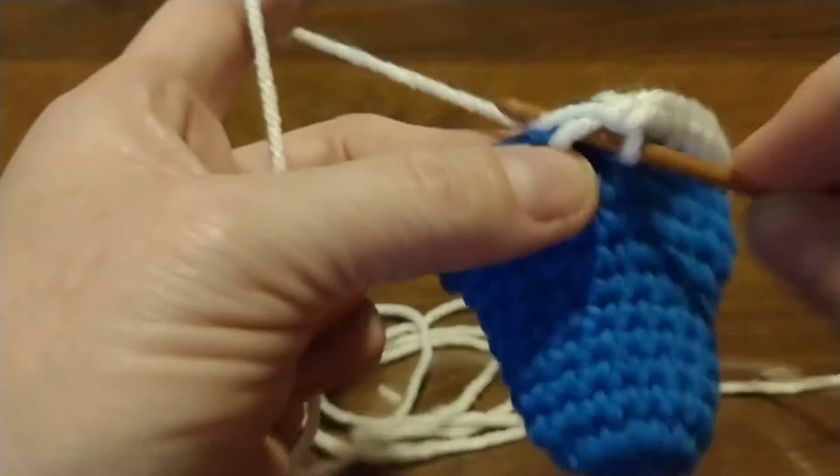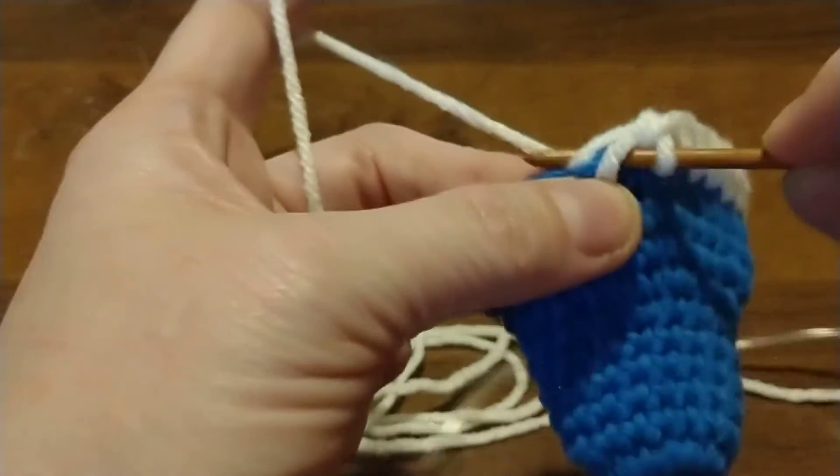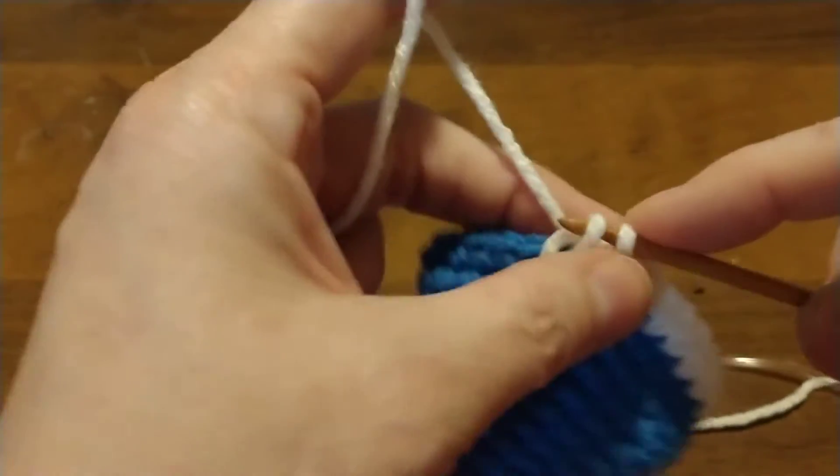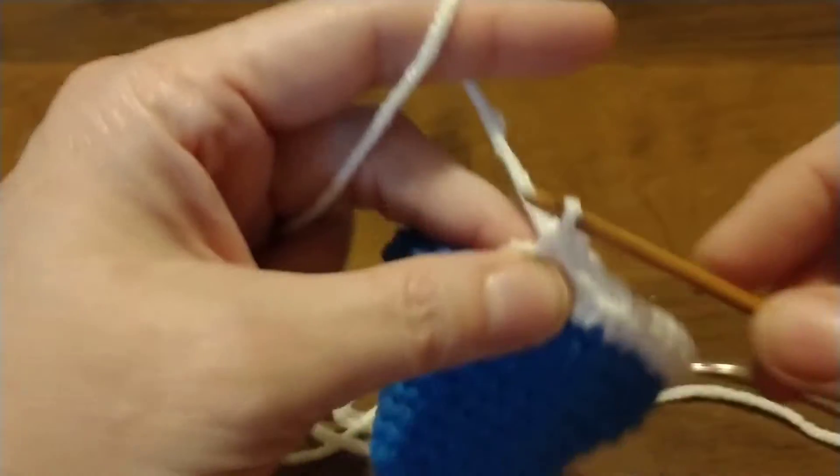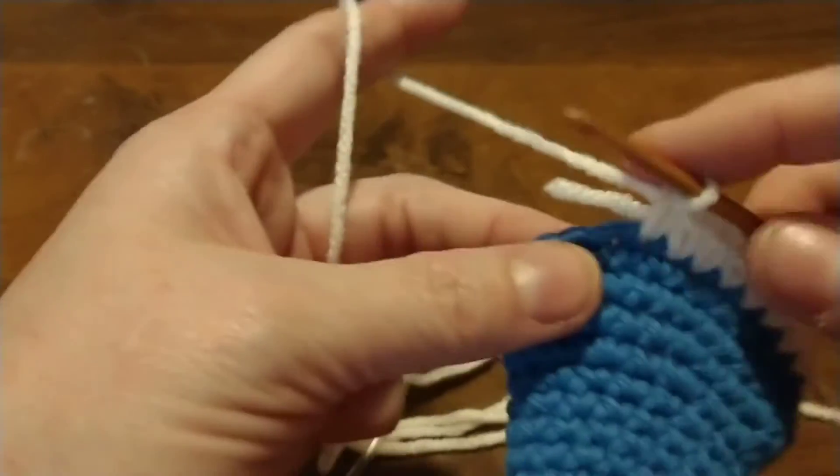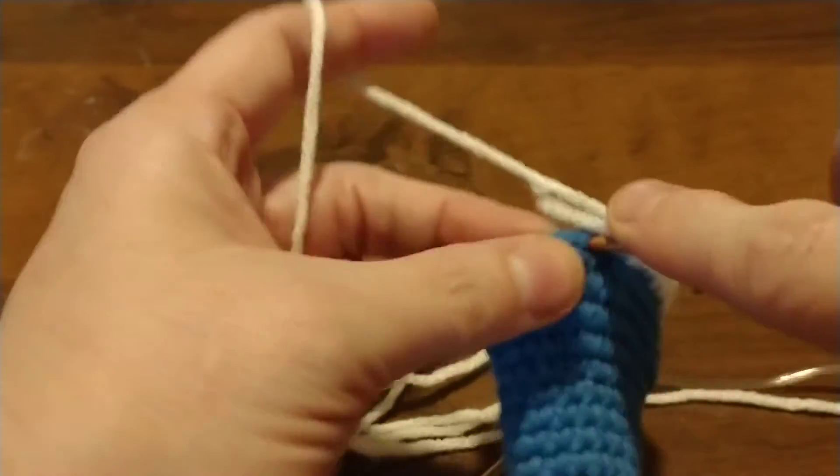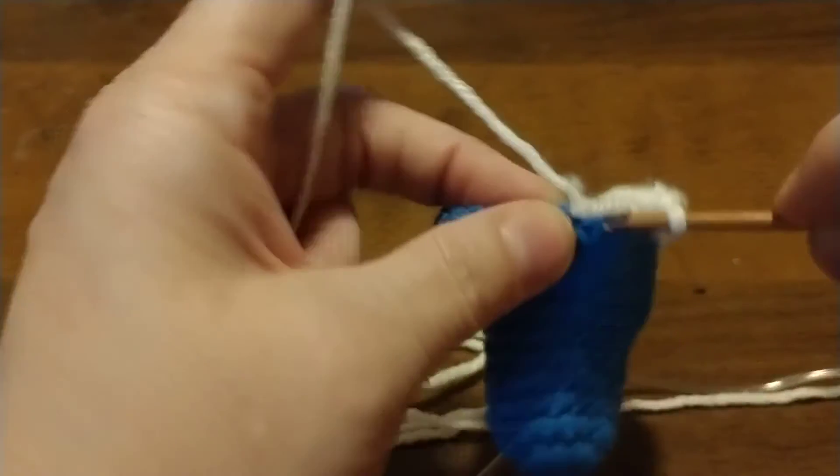Now when you get to like the end of the tail here, you don't have to worry about weaving that in too much more. That little piece, since the main part of the tail is already stuck under all of your stitches, that little piece you can cut off later.